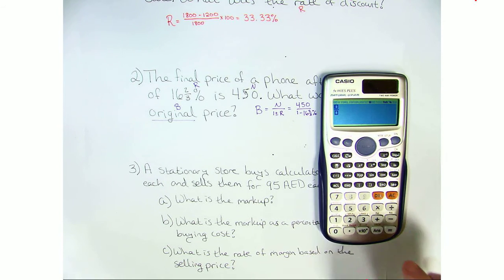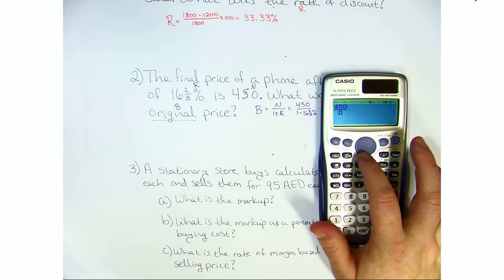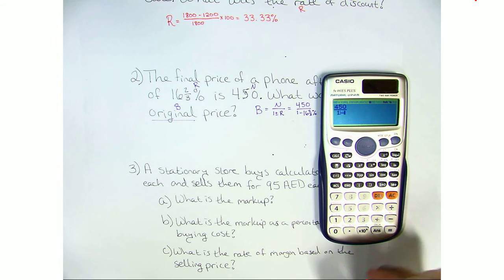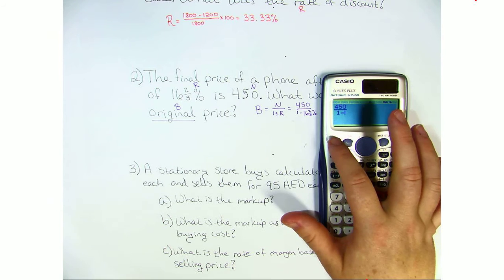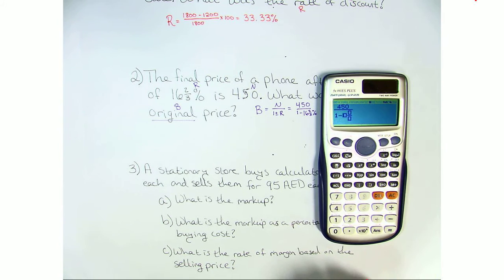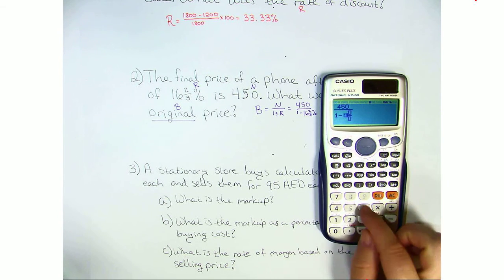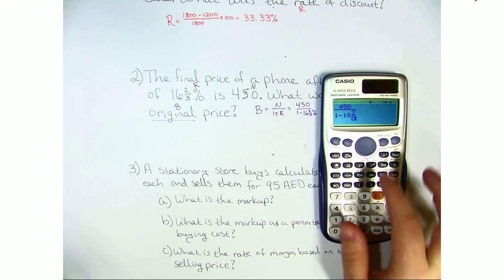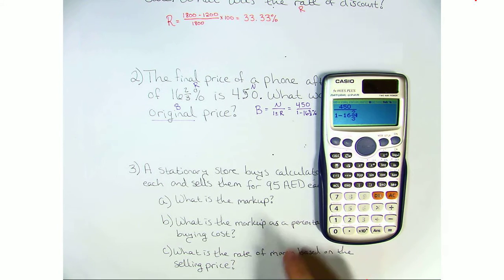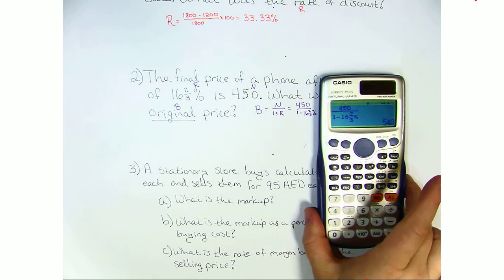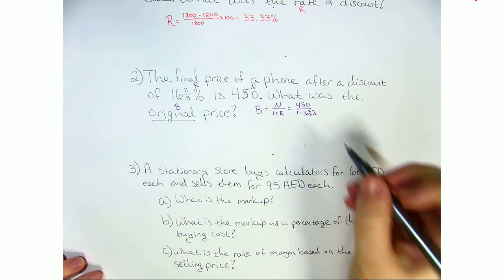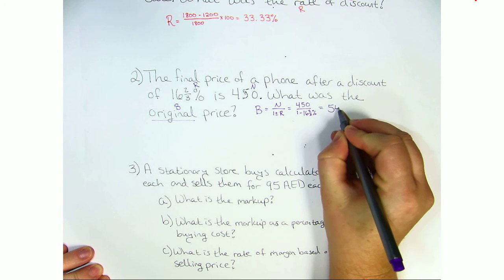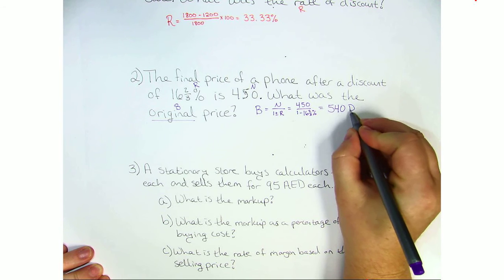So we're going to once again make a fraction. 450 goes on top. Now, 1 minus and we have 16 and two thirds. So we have a mixed number. We need to do shift fraction and you see how it comes up with these three squares. Now we can hit 16 and two thirds. And don't forget afterwards, you need to move it to the side and hit percent. Now once you hit equals, you get the answer 540. So the original price of the phone was 540 dirhams.